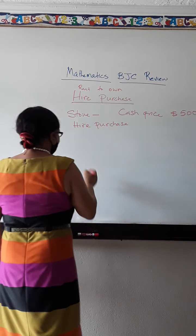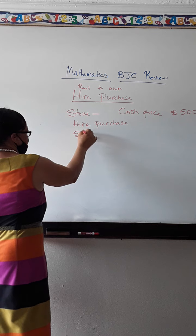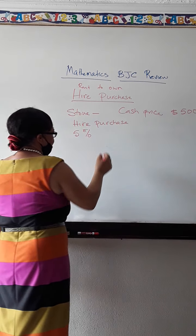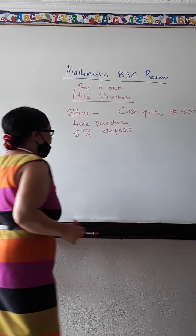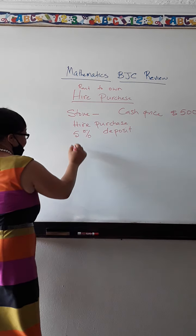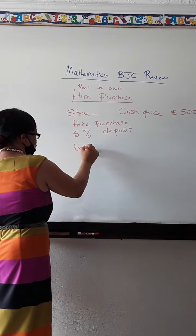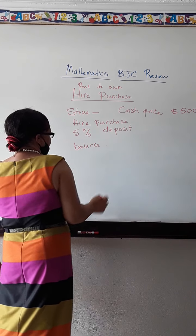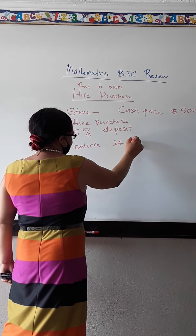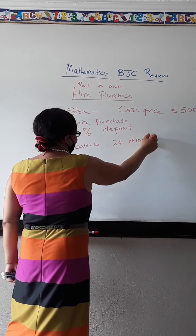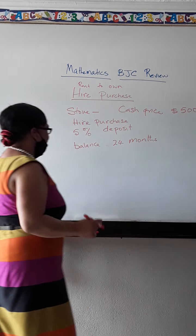For hire purchase I can pay a deposit. It is 5% deposit. And then I can pay my balance off in 24 months. That is 2 years. I can pay this balance off in 24 months.